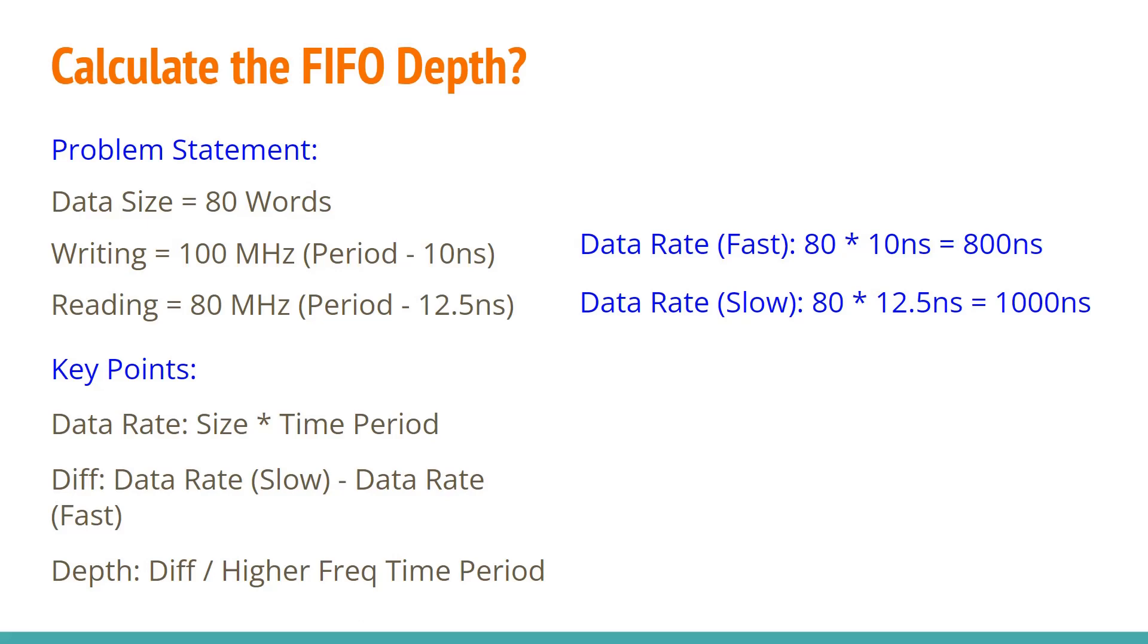So that's the difference we have between the fast and the slow data rate, which is thousand minus 800, 200 nanoseconds. So now you can see if the transmitter starts sending 80 words in a hurry. Once the receiver starts reading, it's going to take 200 nanoseconds more than what the transmitter took. I hope it's clear until this point.